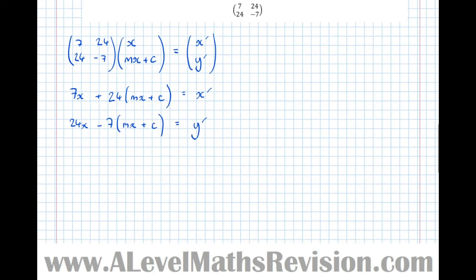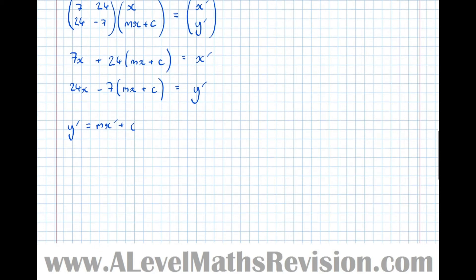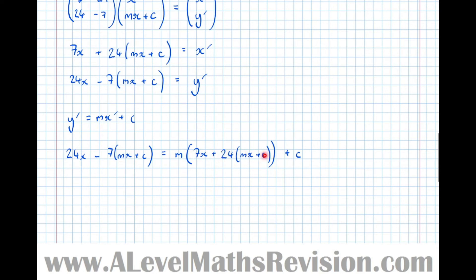If the line truly is invariant, then when we perform the matrix transformation the image should also be of the form y equals mx plus c. So that means y' equals mx' plus c. Let's substitute in: y' is 24x minus 7(mx plus c), and mx' plus c is m times (7x plus 24(mx plus c)) plus c.